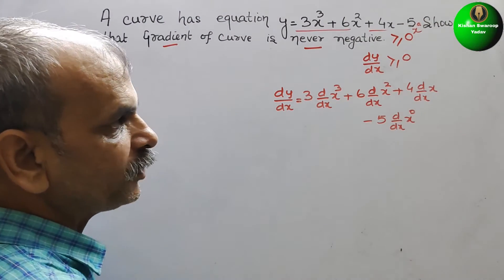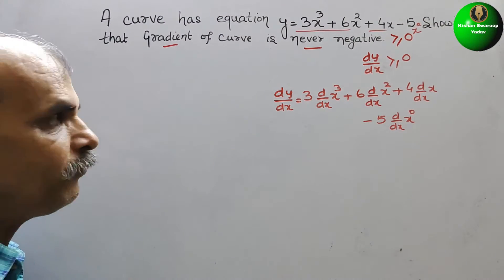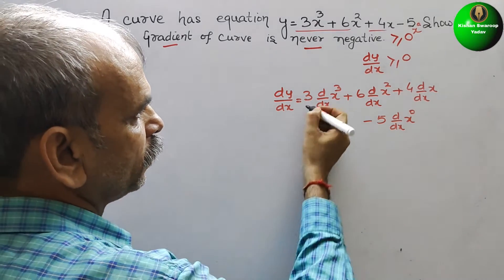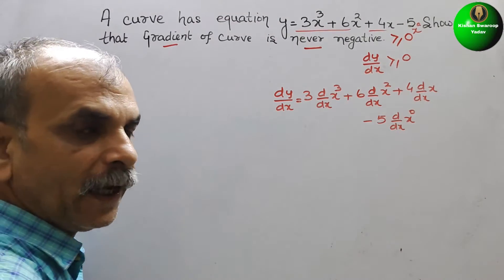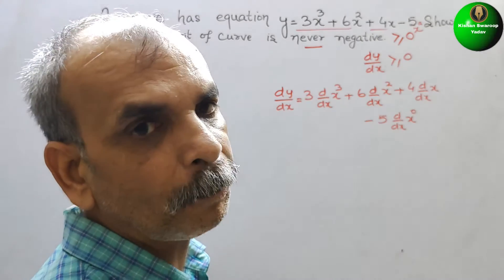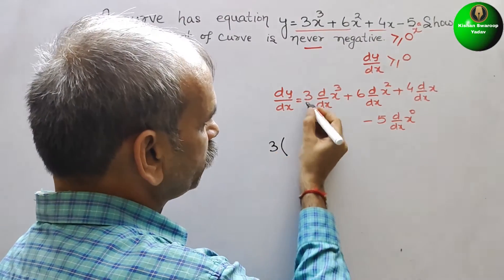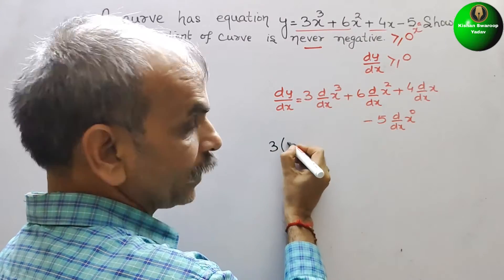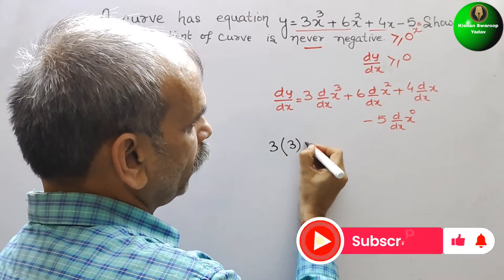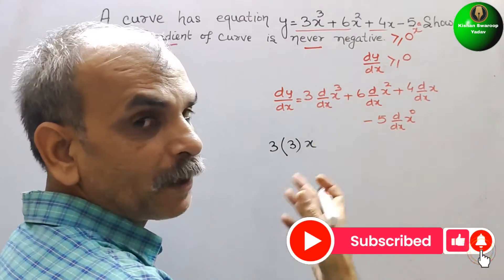So now if you differentiate, we will solve it with the help of power function. We will get 3 into 3, and x to the power of n-1, that is x².